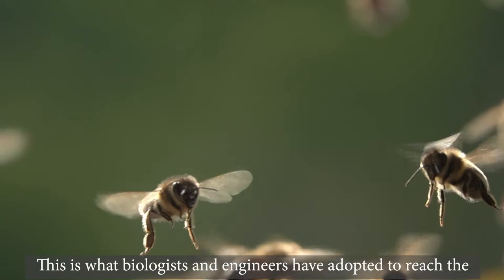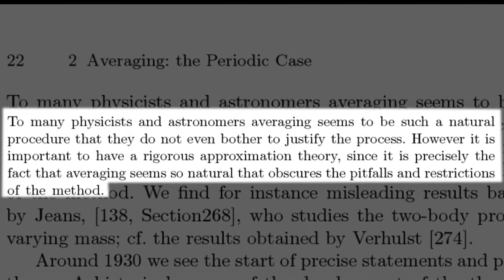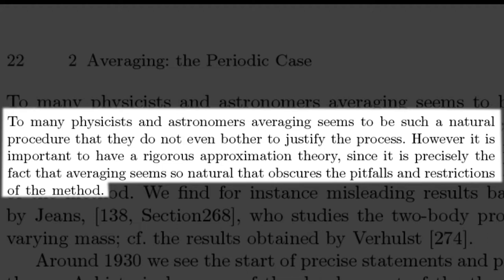But let us read this quote from the book of Saunders and Verhuis, the Bible of Averaging. To many physicists and astronomers, averaging seems to be such a natural procedure that they do not even bother to justify the process. However, it is important to have a rigorous approximation theory, since it is precisely the fact that averaging seems so natural that obscures the pitfalls and restrictions of the method.